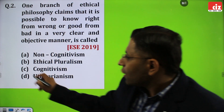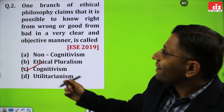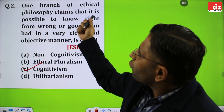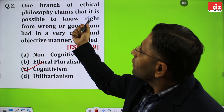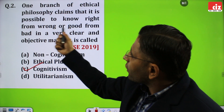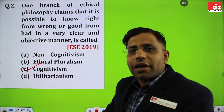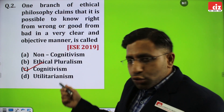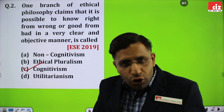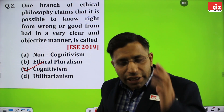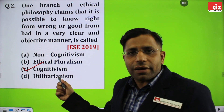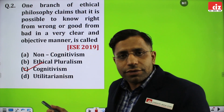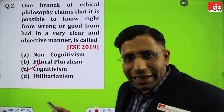Overall, the right answer is cognitivism as per the UPSC pattern. Cognitivism is the branch of ethical philosophy that says it is possible to know right from wrong — it identifies what is right and what is wrong — in a clear and objective manner. A person can deduce whether something is right or wrong based on their thinking process and knowledgeable pattern. So overall, this is clear. Let us proceed with the next question.